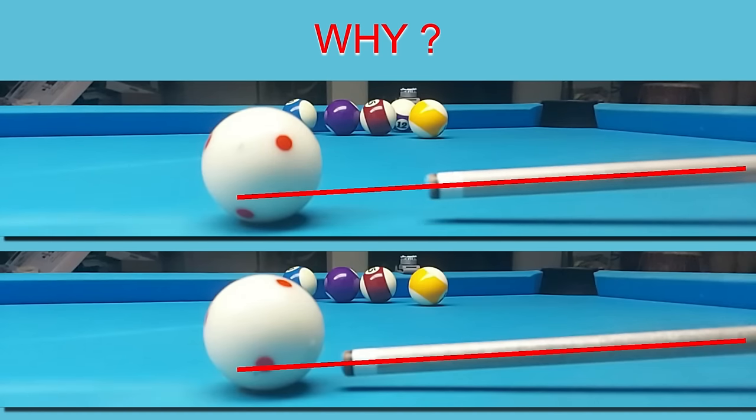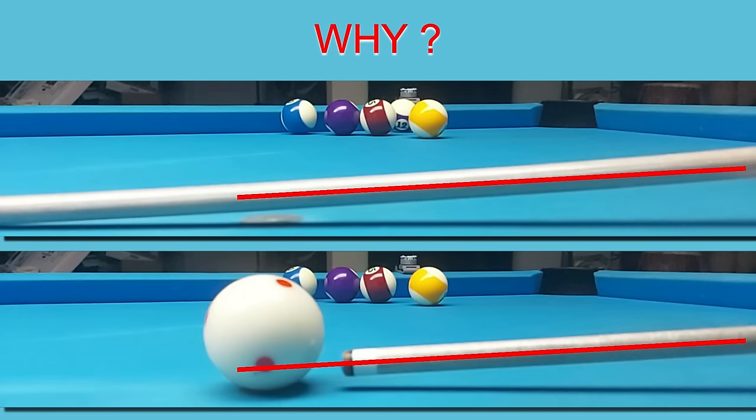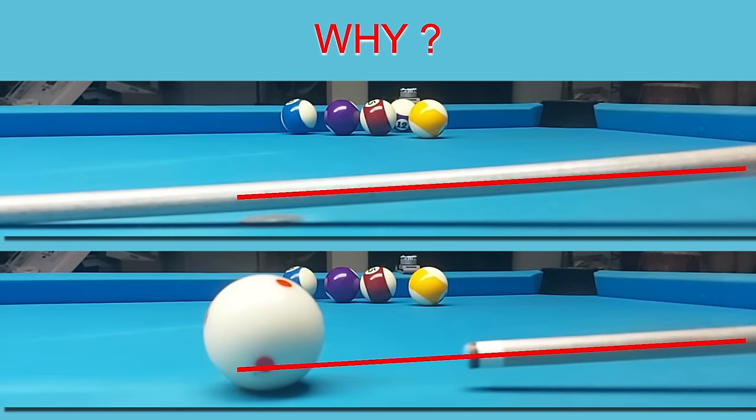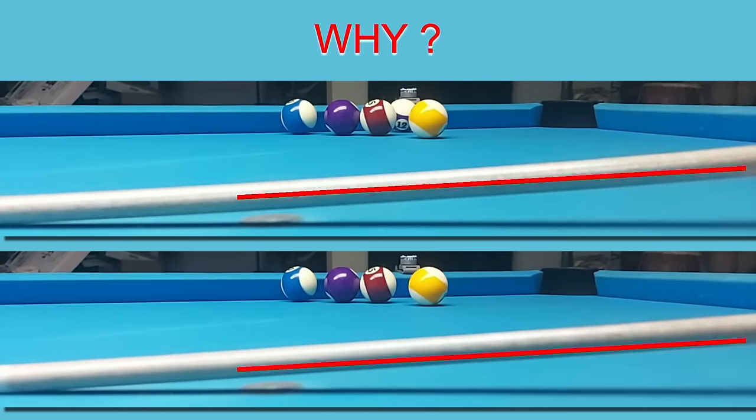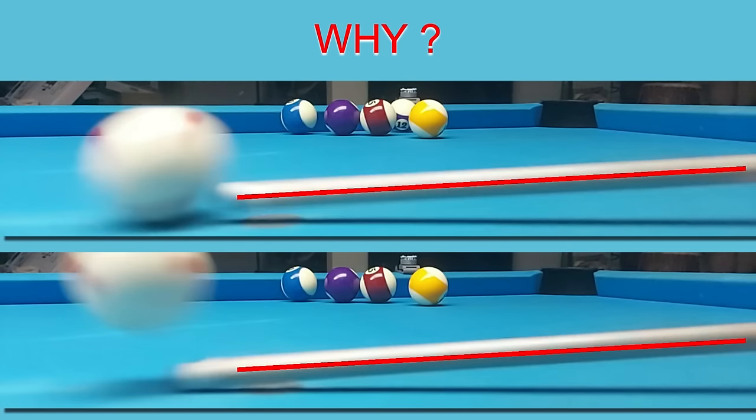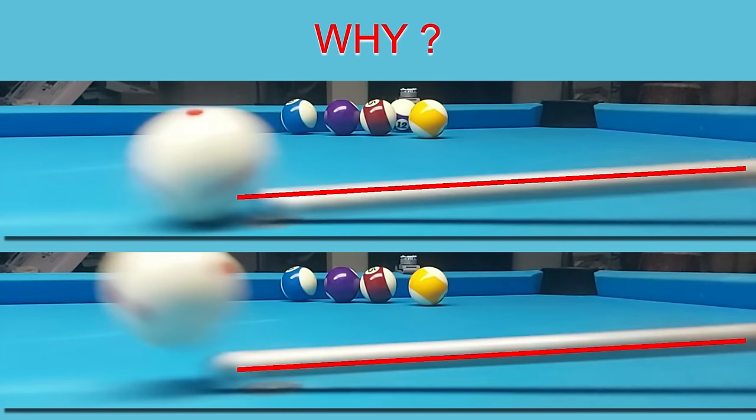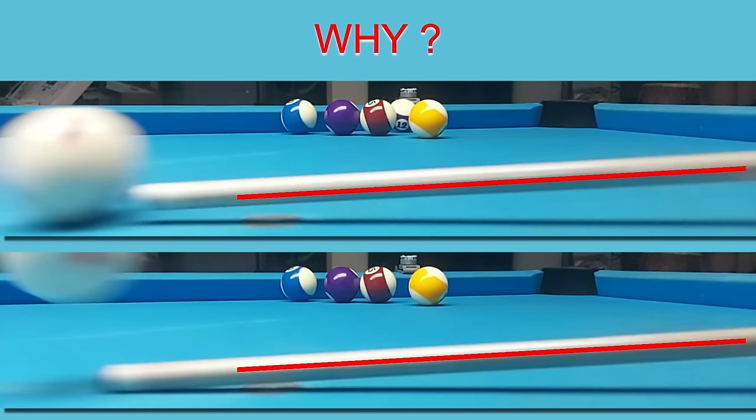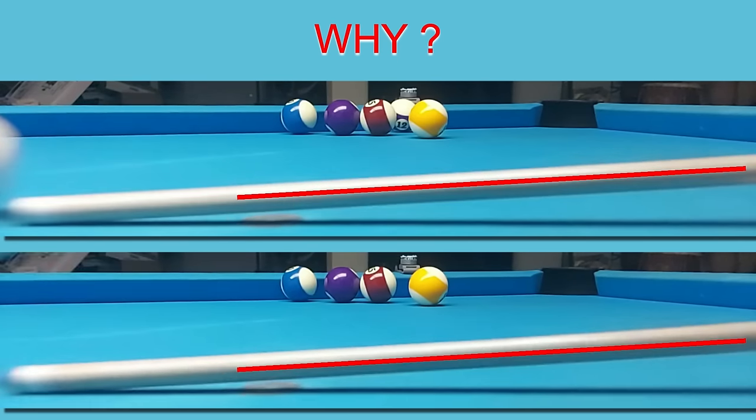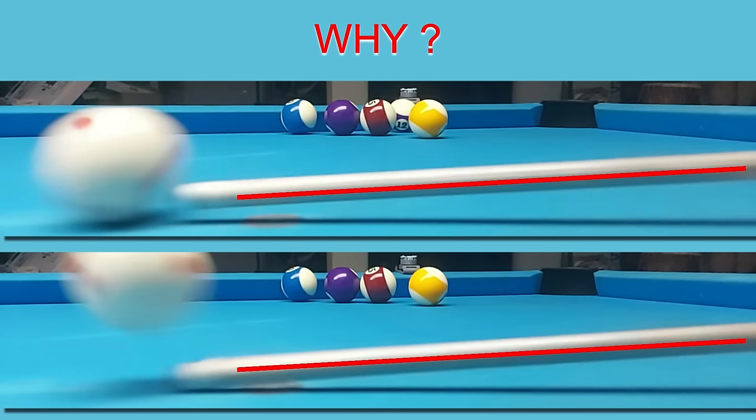The red line marks the plane of the shaft, which is stroked fairly consistently on the backstroke and cue delivery. Now look at the miscue. Did you see that? Comparing frame by frame, you can see that on the miscue, the tip dips just a bit more just before impact.